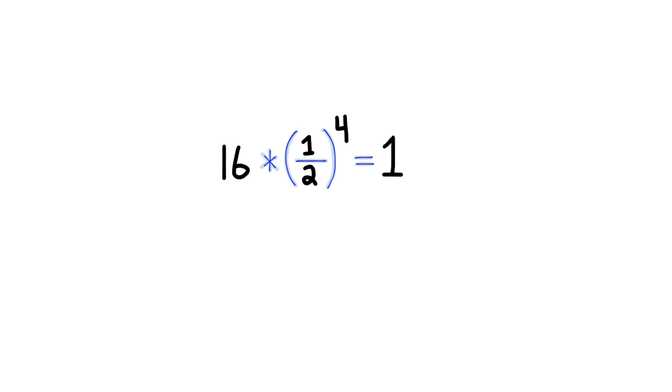So we started with 16 items, then halve that amount four times until a single item was left. Okay, let's check the math on this equation. First, let's distribute the exponent to both parts of the fraction. 1 to the fourth is just 1, of course, while 2 to the fourth is 16. So it looks like 1 is 1. Cool.